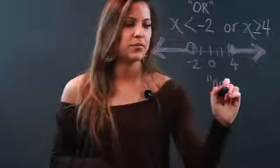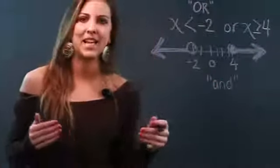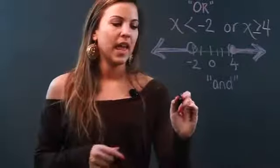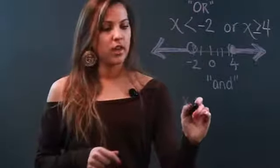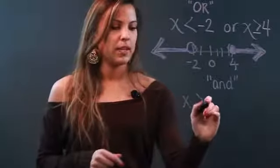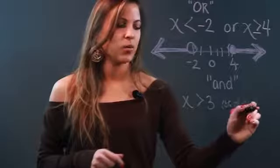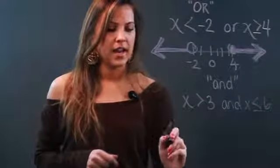Now an AND is going to be a little different. An AND inequality becomes the intersection of two different inequalities. So if I say to you X is greater than 3 and X is less than or equal to 6, now what I'm doing...